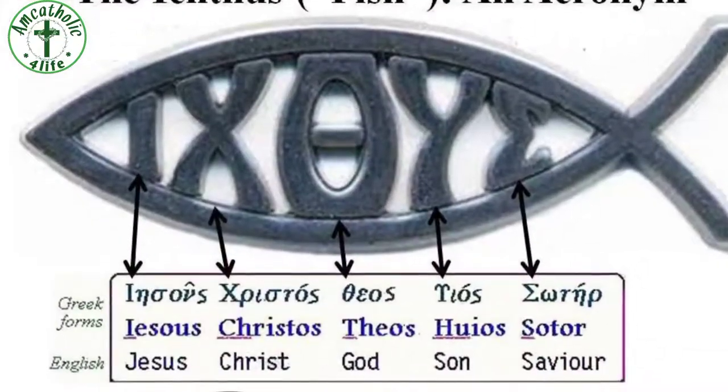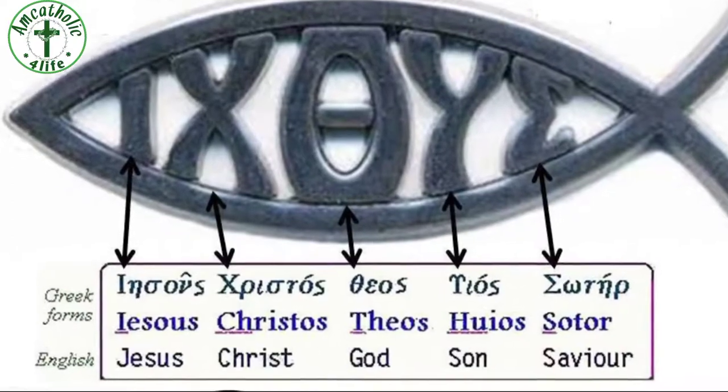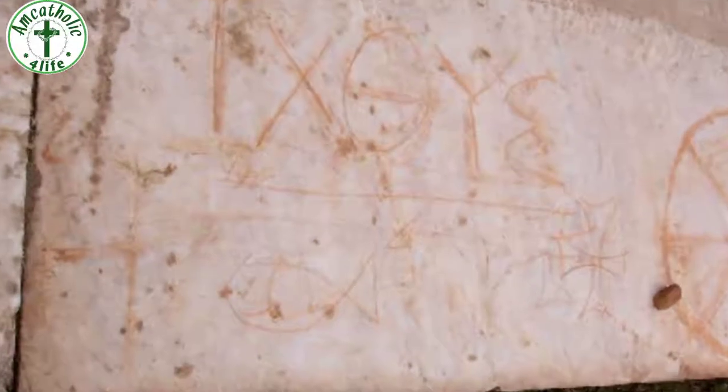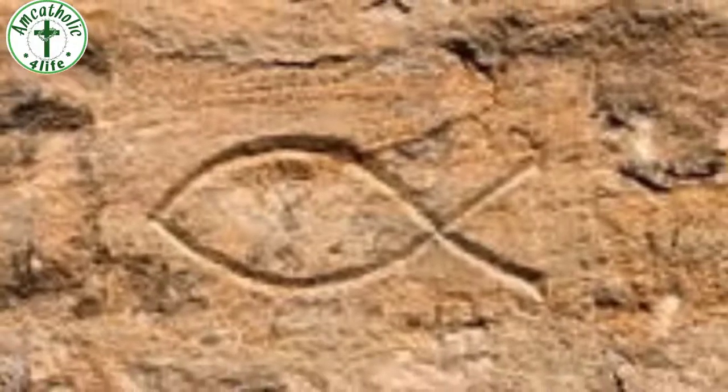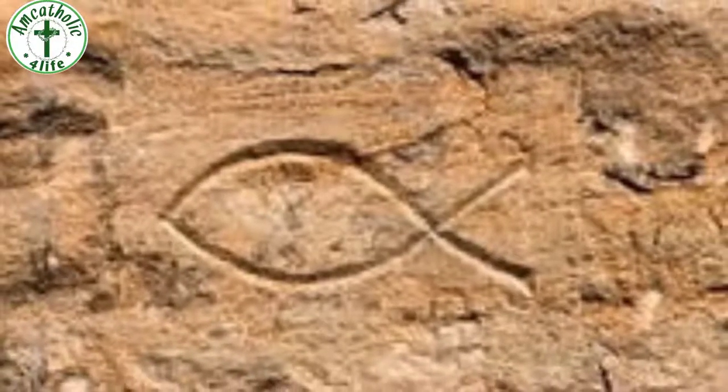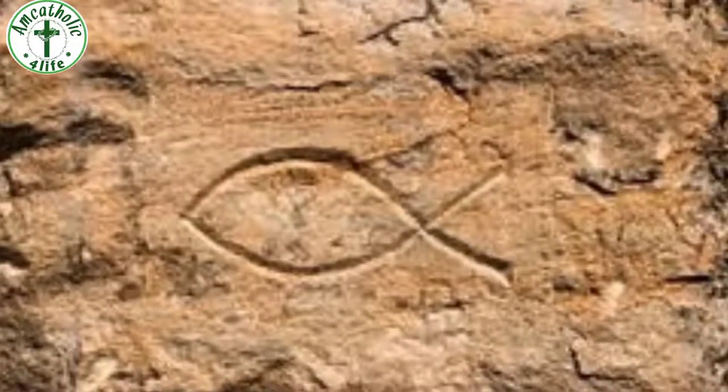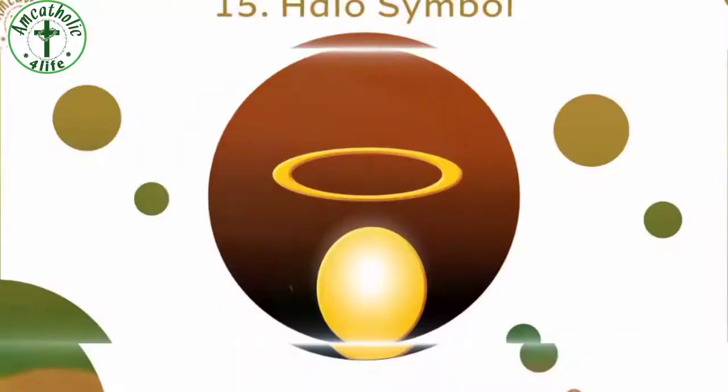The Greek word for fish is 'Ichthys,' which is also an acronym for 'Jesus, Son of God, Savior.' It was used by Christians during Roman persecution as an identification marker. They used it as a secret code to identify other Christians, and also marked tombs with it to signify that a Christian was buried there. It was used to identify Christians because Jesus called his disciples fishers of men.